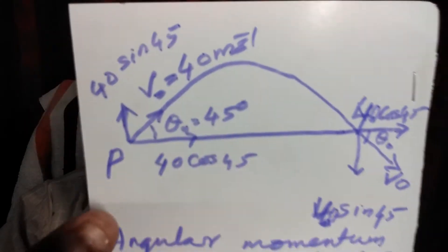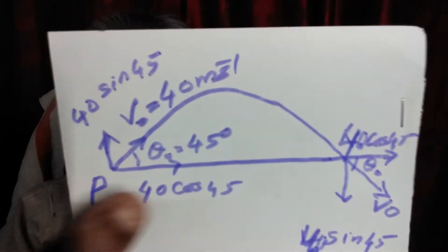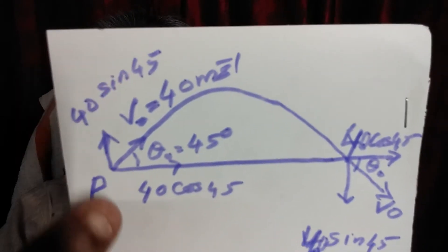Then the components are 40 cos 45 horizontal, 40 sin 45 vertical.